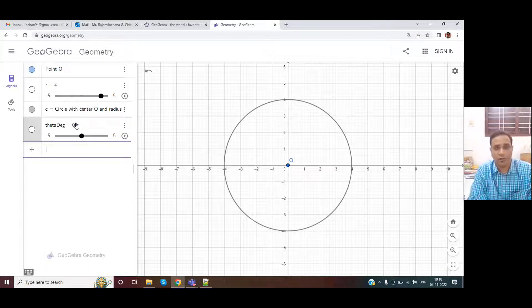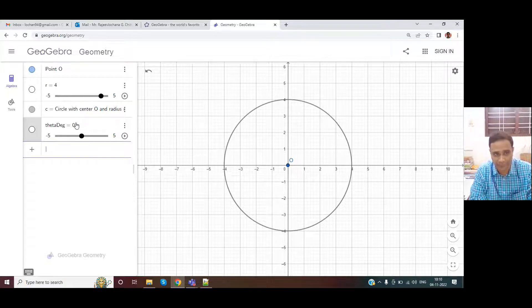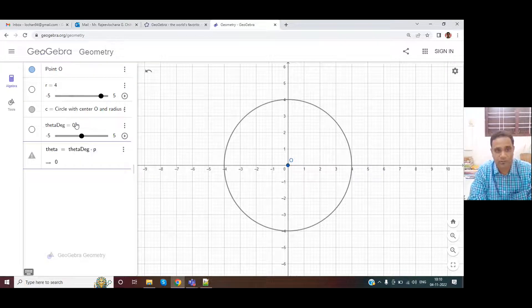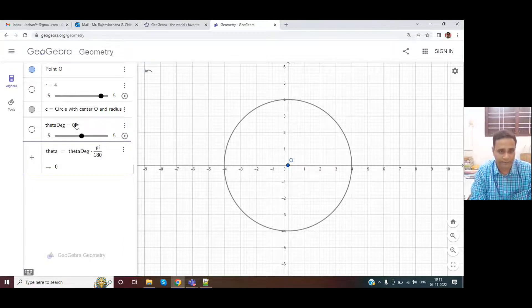Now, the cos theta and sine theta terms have to be determined and the cos and sine functions assume that the input parameter is in radians. So we have to convert the degree to radians. So we'll do theta equals theta degree into pi. Please remember, I used star, star is shift 8 into pi, pi divided by 180.